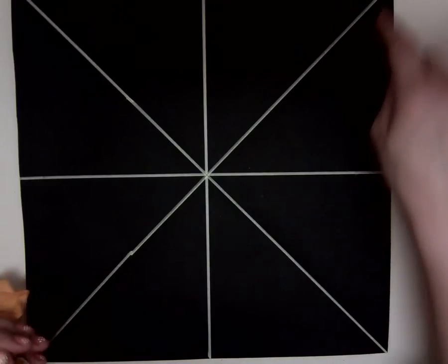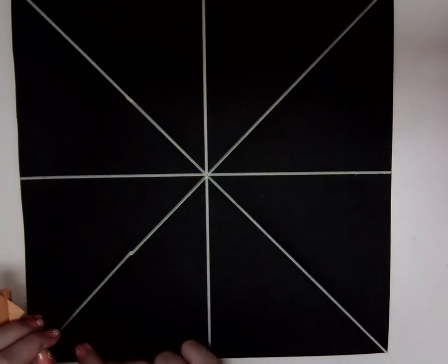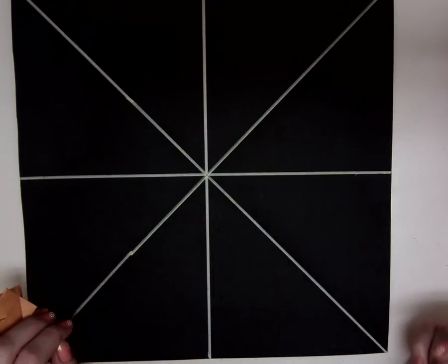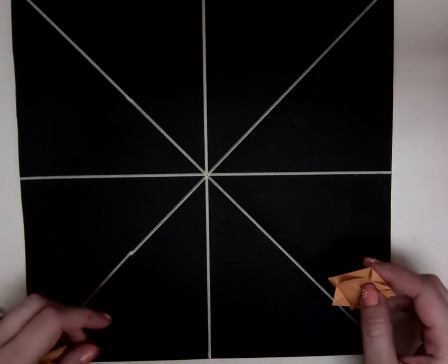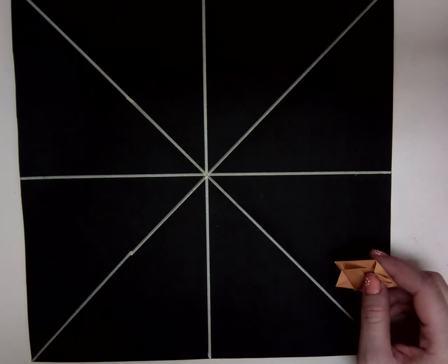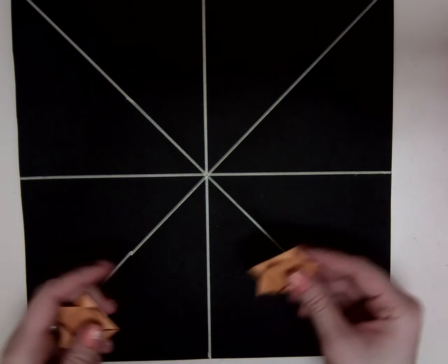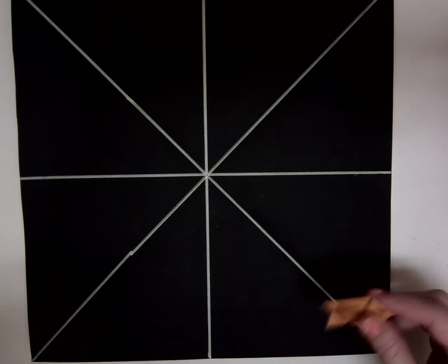So when you start, I drew the lines on mine so you could see them, but what you can do if you don't want to draw them is you can just fold the paper diagonally both ways and vertically and horizontally so you can see those folds. I drew them on there so you could see them a little bit better. These are your guidelines. These are going to help match things up and make it so you're not just guessing.